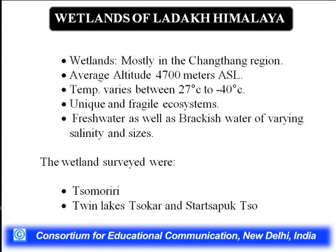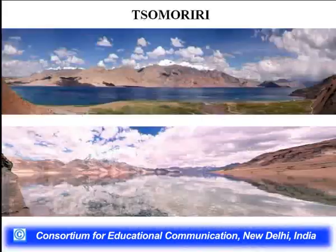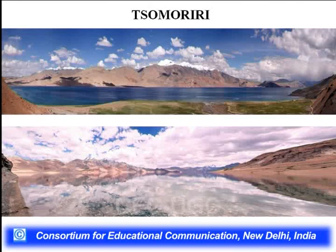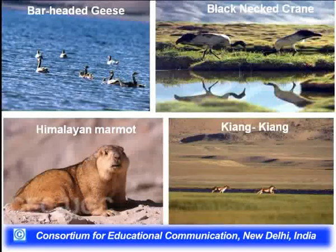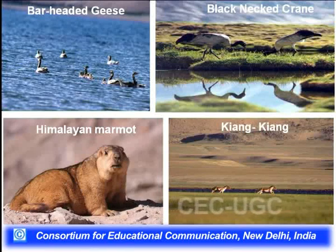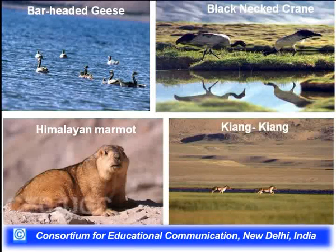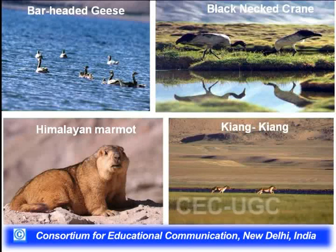In the very high wetland areas of the Changthang region, there is a unique and fragile ecosystem with fresh water as well as brackish water — varying salinity and sizes. Many wetlands are very important to visit, including the Sumori Twin Lakes. The Sumori Lake is a typical lake habitat with very fresh water. There is also a variety of biodiversity including bar-headed geese, black-necked crane, kiang, and Himalayan marmot.